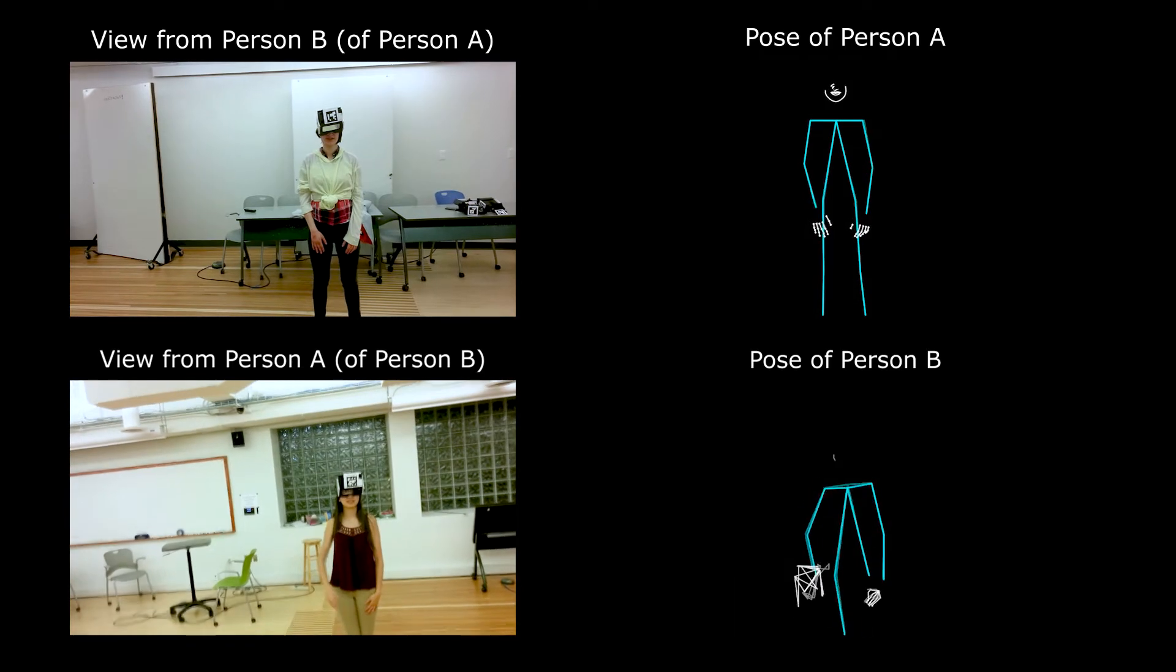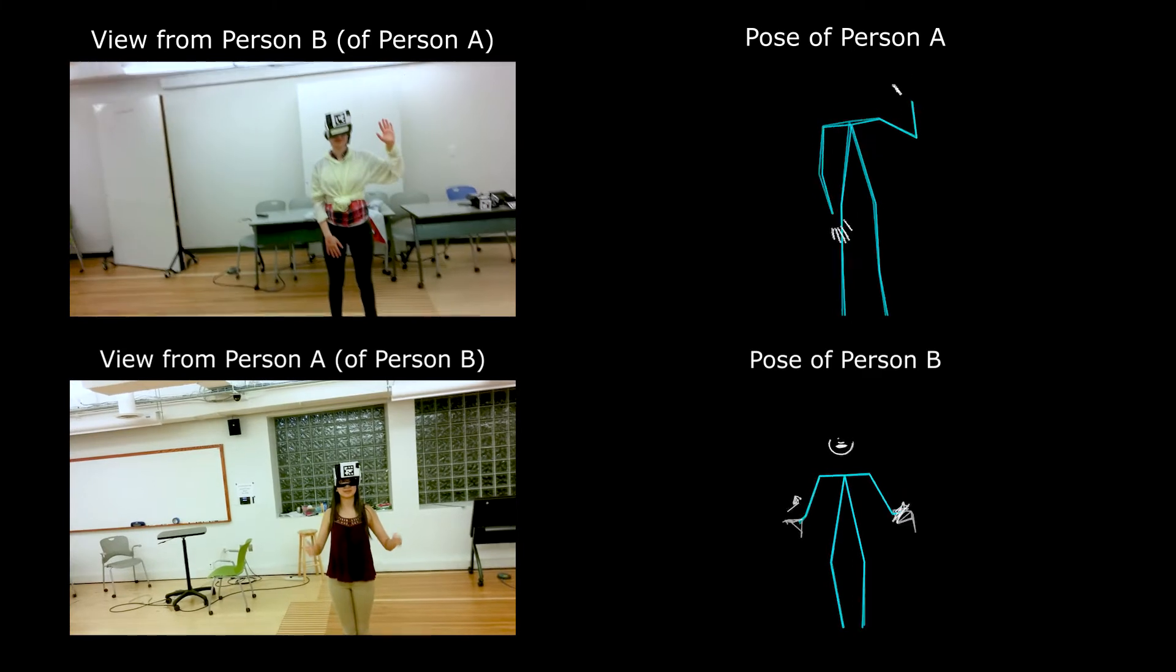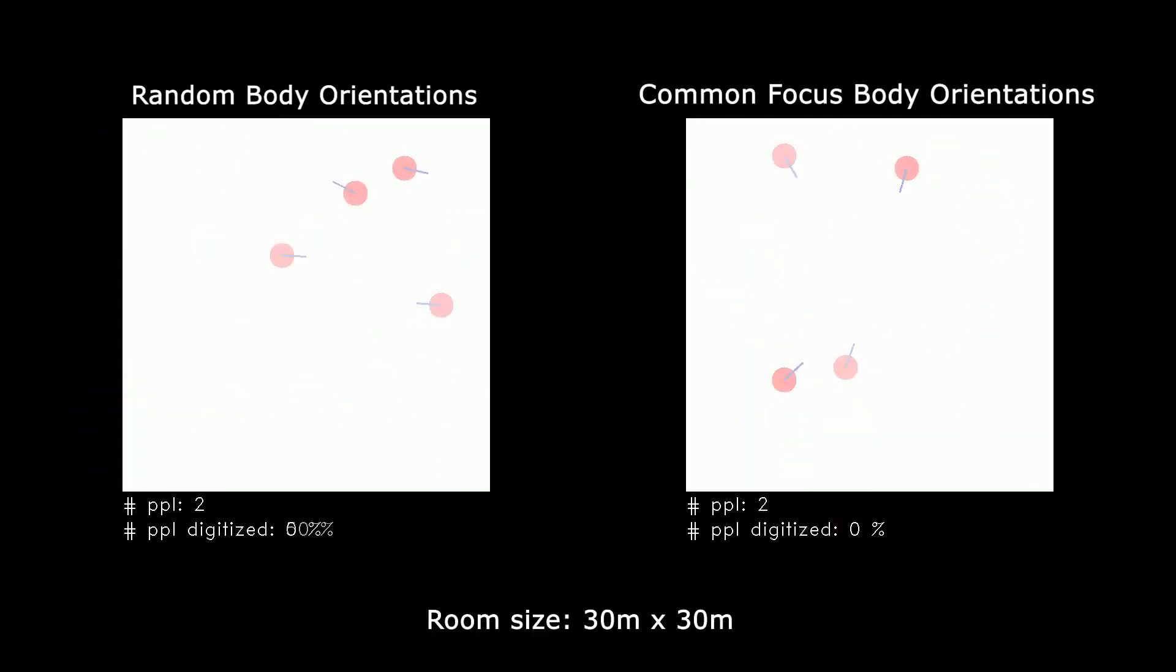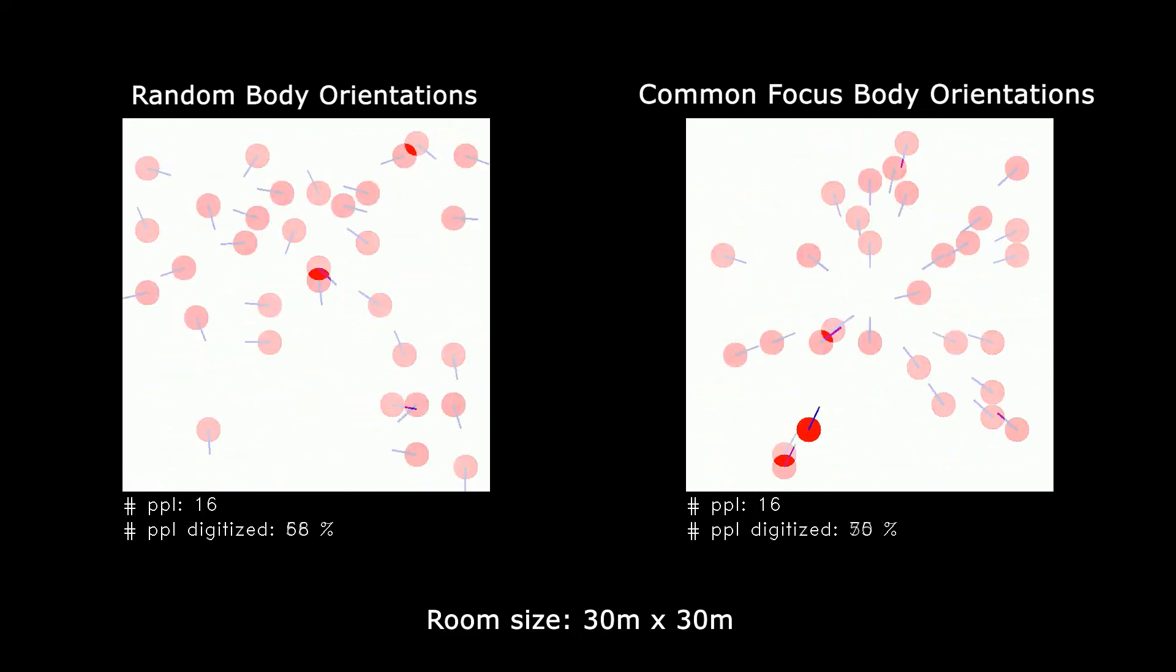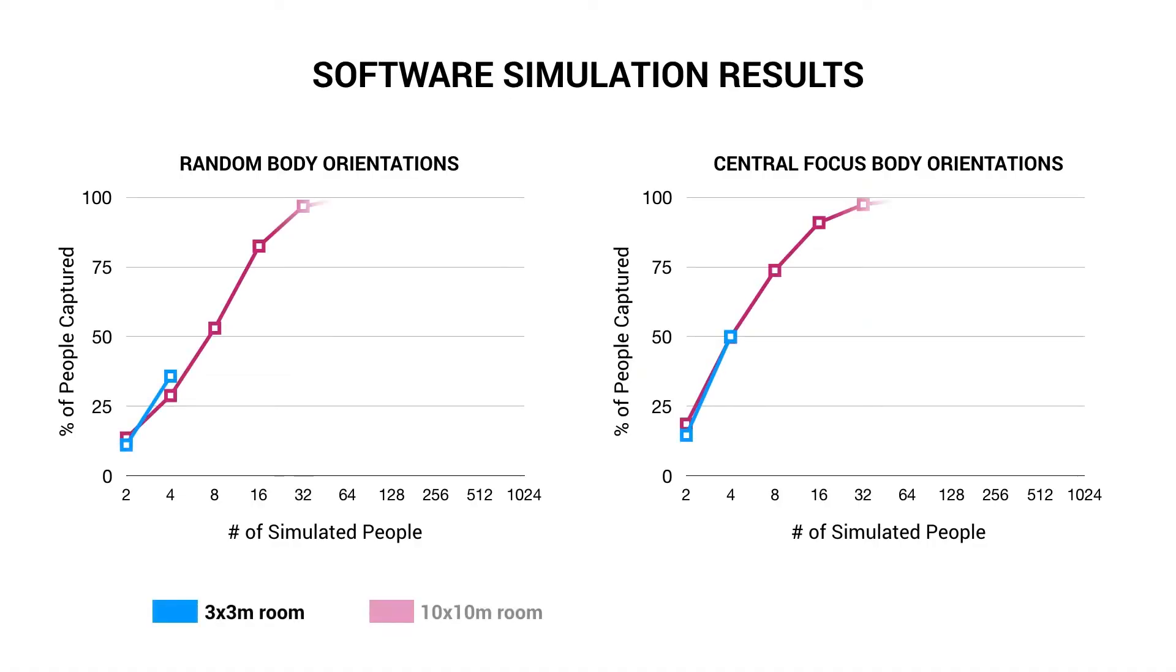Our user studies showed that body, hand, and mouth tracking, as well as gesture classification can be quite accurate. We also ran software simulations for larger numbers of users in different size rooms with random and central focal points. We found that performance improves as the number of users in the space grows.